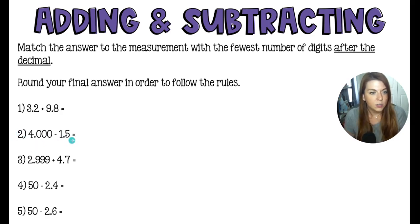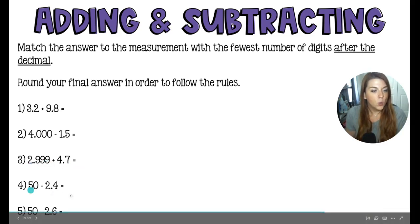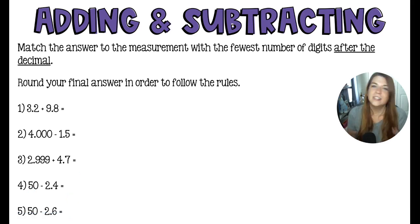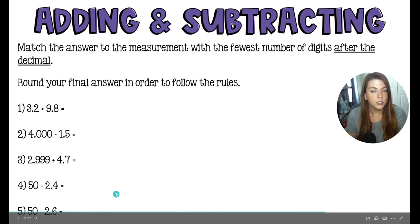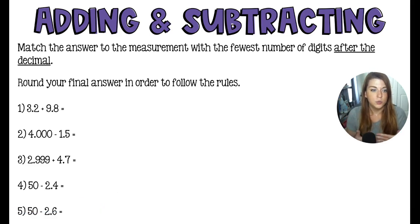So in this case, for number two, you are going to round to have one number behind the decimal. In number three, you should round to have, again, one number behind the decimal because 4.7 only has one number, where 2.999 has three. In number four, you will have no numbers behind the decimal. 50 doesn't have a number behind its imaginary decimal. So your answer should be a whole number. And the same is true for number five. 50, again, does not have a number behind the decimal. So you are going to match your answer to that.